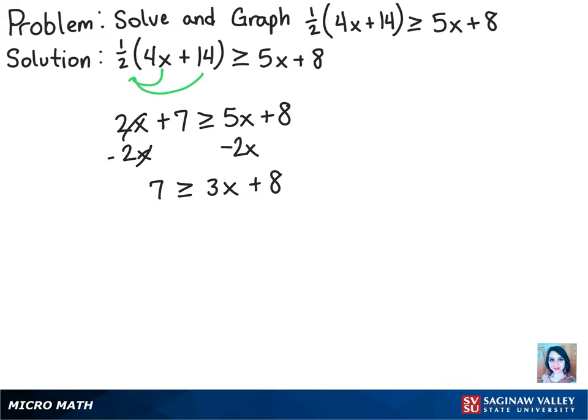And now we want to get rid of that 8 on the right so that x is on the right side by itself. So we have negative 1 is greater than or equal to 3x.